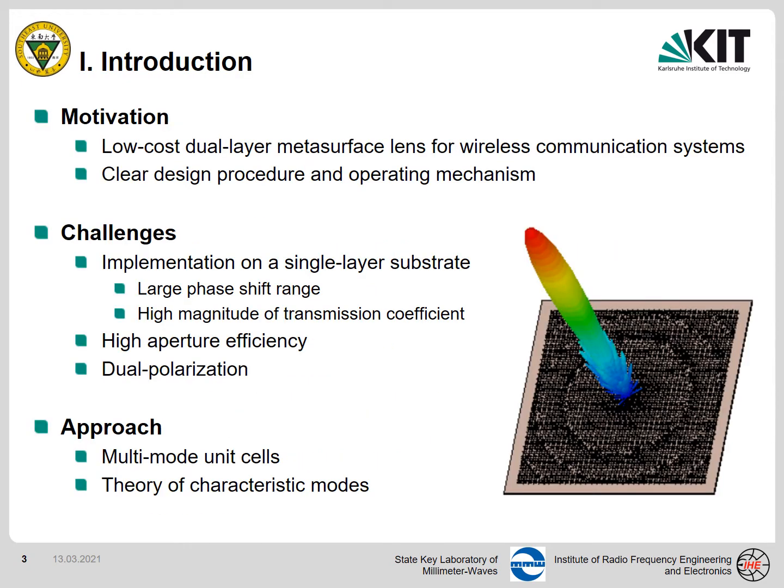The motivation of this work is to realize a low-cost dual-layer metasurface lens for a wireless communication system with a clear design procedure and operating mechanism. The challenges are how to implement such a lens on a single-layer substrate with enough phase shift range and high magnitude of transmission efficiency. We also need high aperture efficiency of the lens and dual polarization. So our method is to propose a multi-mode unit cell based on the theory of characteristic modes.